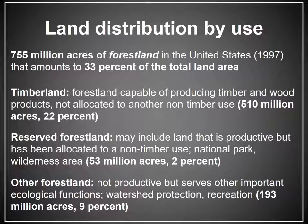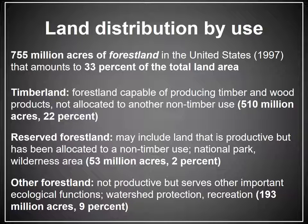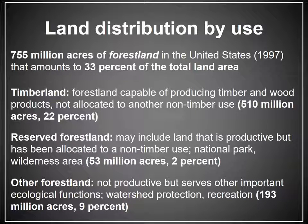Just to provide a little perspective, there are 755 million acres of forest land in the United States, amounting to a little over 30 percent of the total land area. Breaking it down further, land that we may classify as timber land — productive forest land that is currently not allocated to a use that would preclude timber harvesting — accounts for just 22 percent of the land base in the United States.